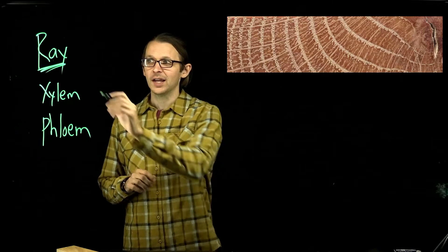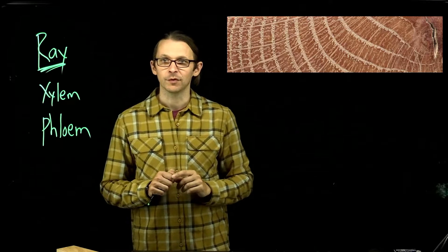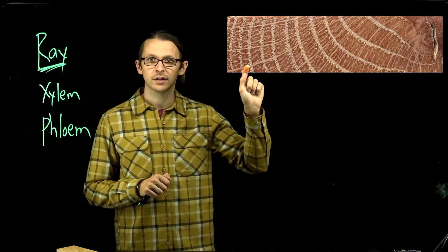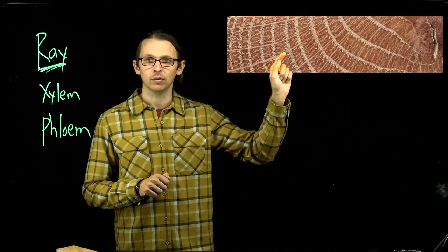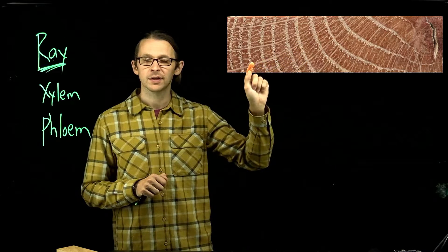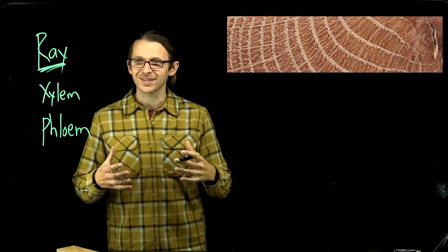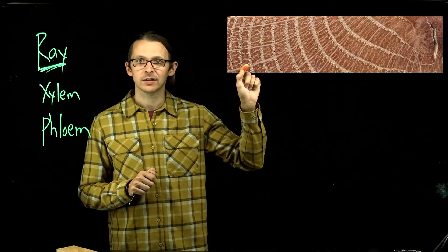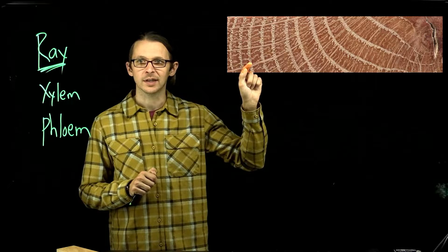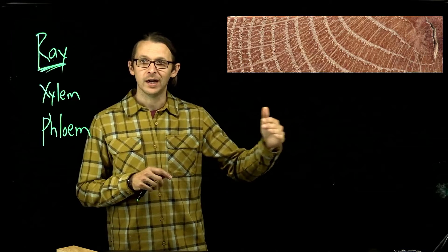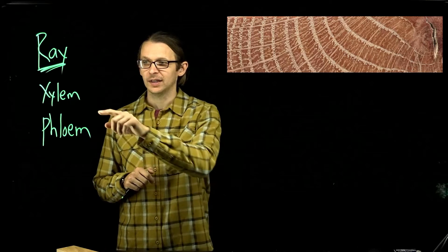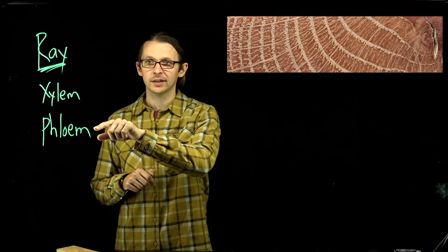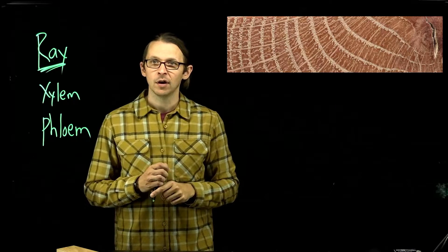My friend Ray — what I want you to gain from this particular video is an understanding of what this structure is. My finger is on a big, long series of cells that are running kind of horizontally through the stem of a tree and are directly connected to these xylem cells. And they grow all the way out into the outer bark of a tree and connect to phloem. So these two pipes are connected through the actions of rays.